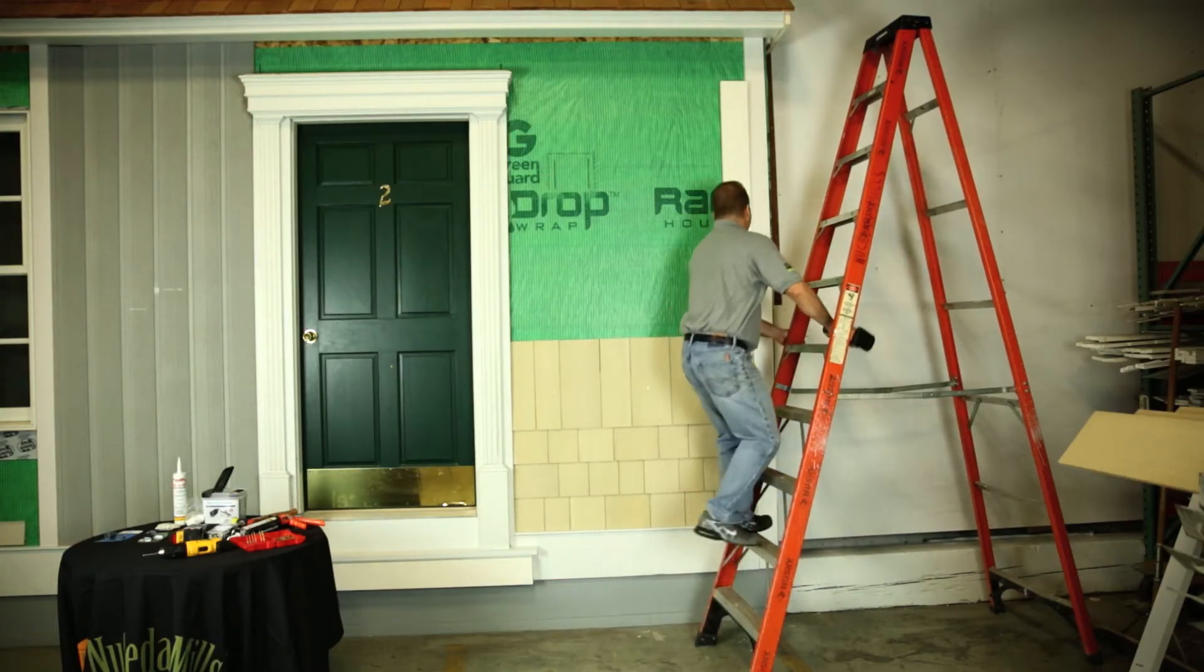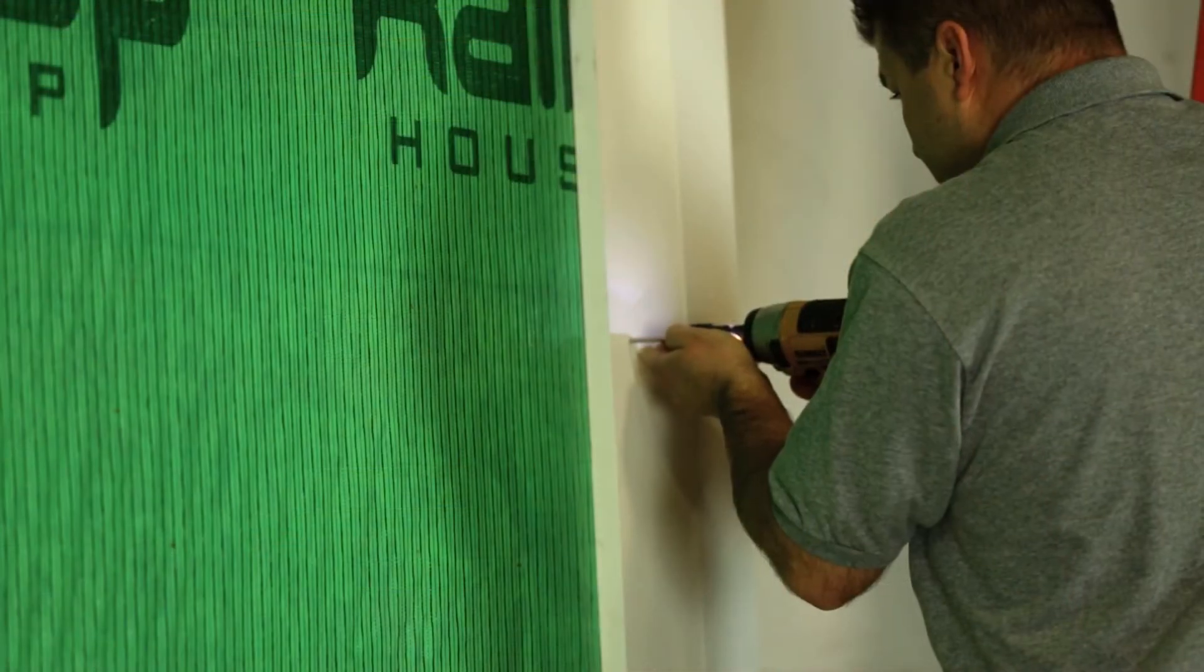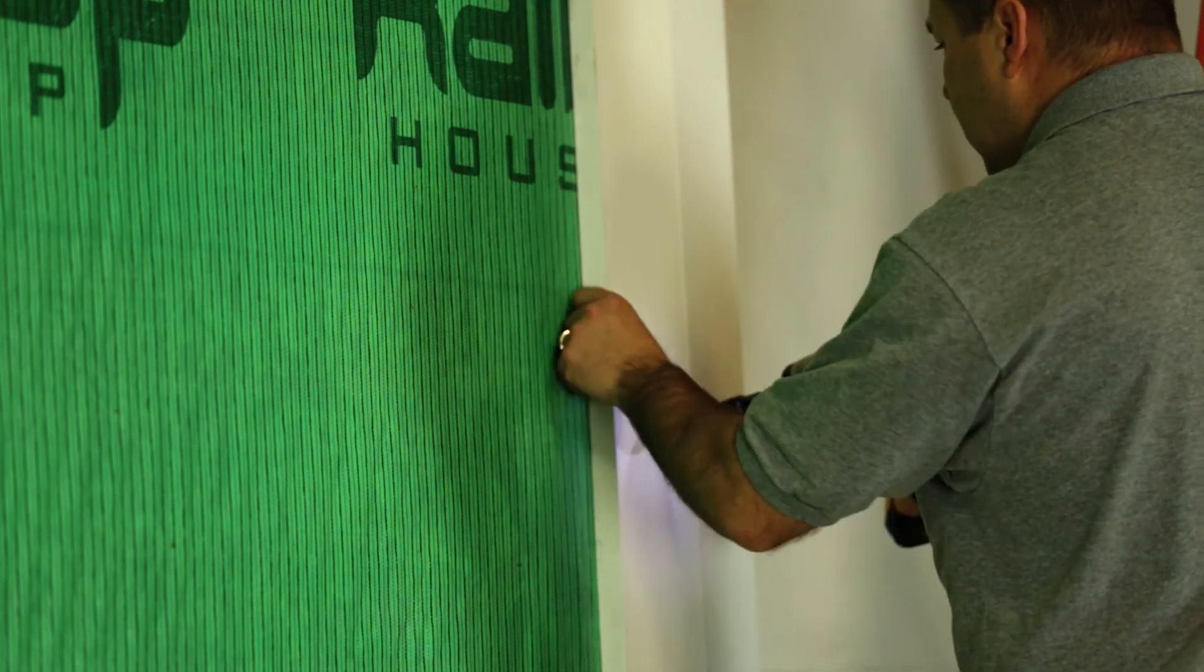When using PVC J pocket trim, do not nail or screw the trim boards through the channel edge of the J pocket. To avoid this, keep your nails at least 1.5 inches from the edge of the J pocket.